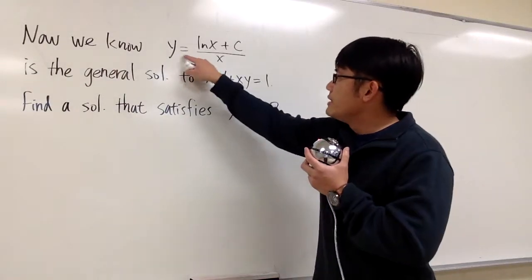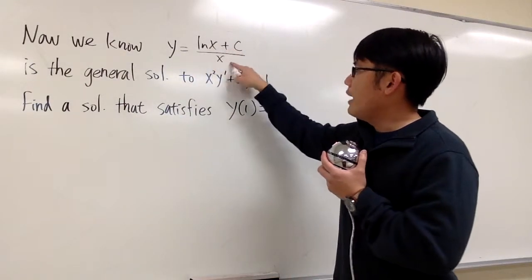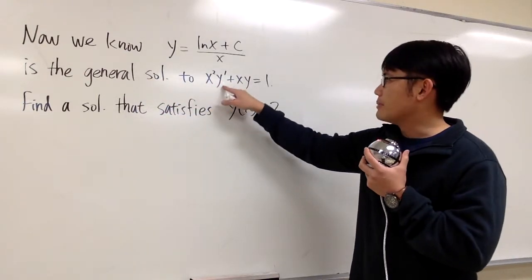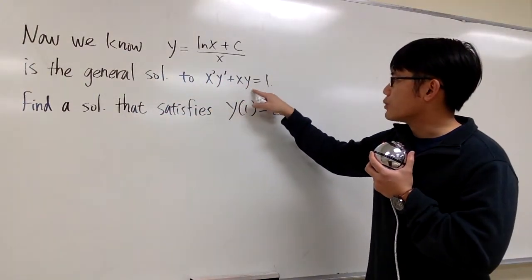Okay, now we know y equals ln x plus c over x is the general solution to the differential equation x squared times y prime plus x times y equals 1.